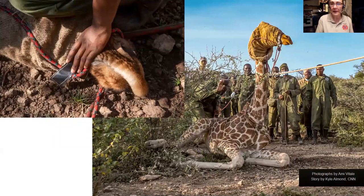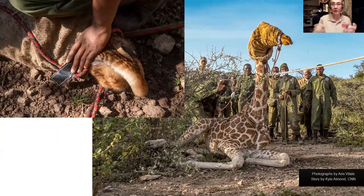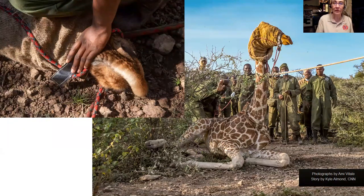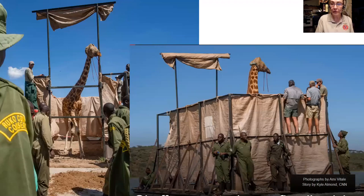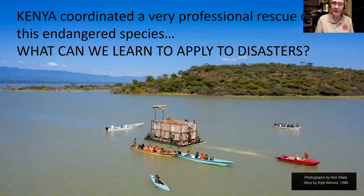Using best practices, after tranquilization and the animal going down, they immediately give a reversal, cover its head, put on the appropriate ropes to control it. It's sort of like a jewel wasp moving a roach — the same concept. This does not work well with equids; veterinarians who work with zebras and horses say don't try it. But with giraffes it works, as long as you stay more than 12 feet from their feet due to their long legs. They moved the animal onto a barge and to safety.